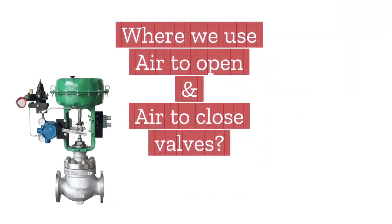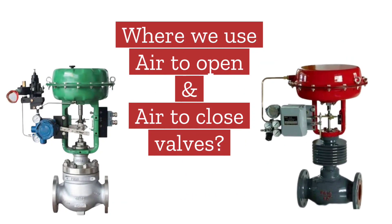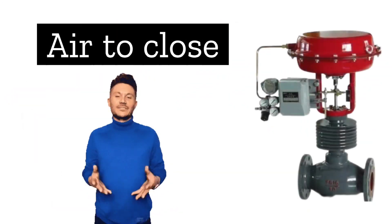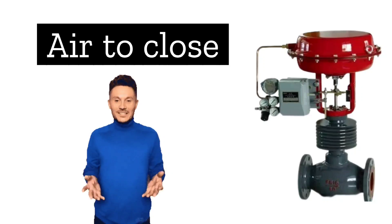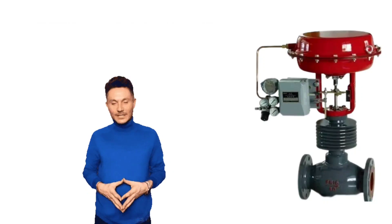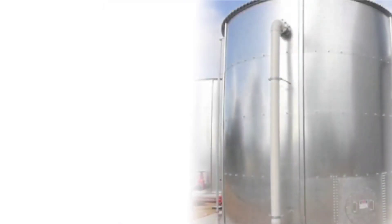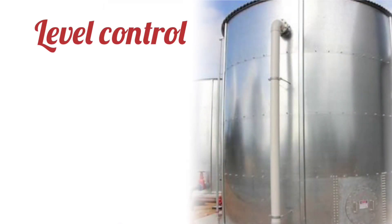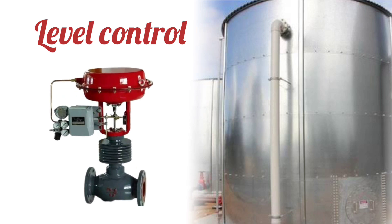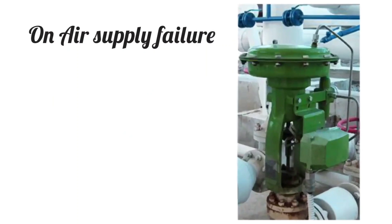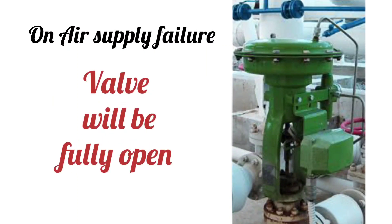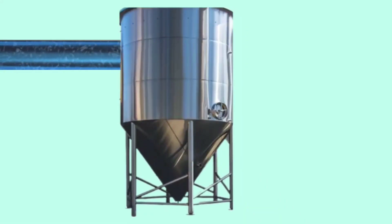You must know this question: where are air-to-open and air-to-close control valves used? First, let's see the use of an air-to-close control valve. An air-to-close valve is used where it is necessary to deliver liquid or fluid to a tank. For example, if you want to control the level of a tank, you will use an air-to-close valve there. Because when the air supply fails, the valve will be fully open and the liquid or fluid keeps going into the tank, so the tank will be full and will not be completely empty.